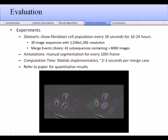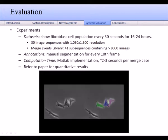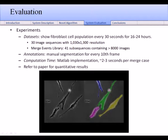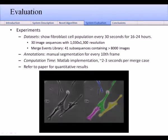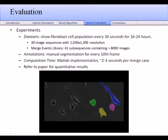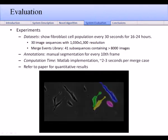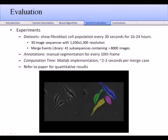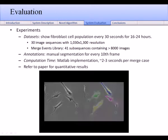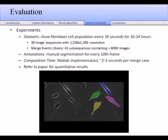We also demonstrated the benefit of our method quantitatively in the paper. Our data source included 41 subsequences containing cell collisions that lasted from 25 frames in duration to over 700 frames in duration. In comparing the segmentation results against annotations, we found our system maintained accurate recognition of cell boundaries across over 8,000 images. Our current MATLAB implementation can process each merge event in 2 to 3 seconds.